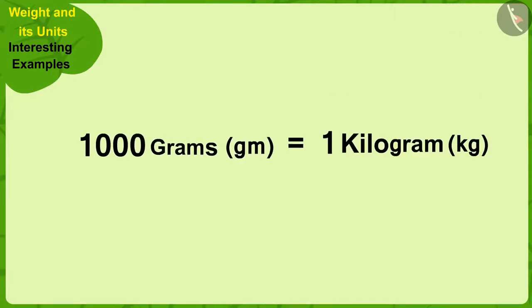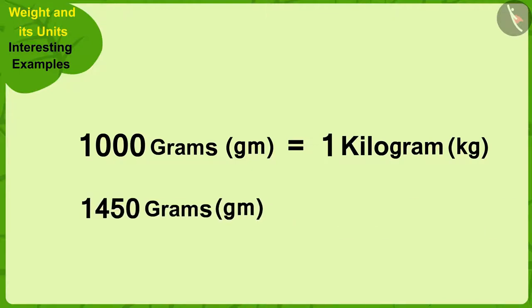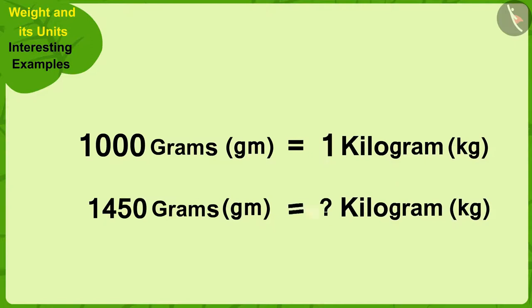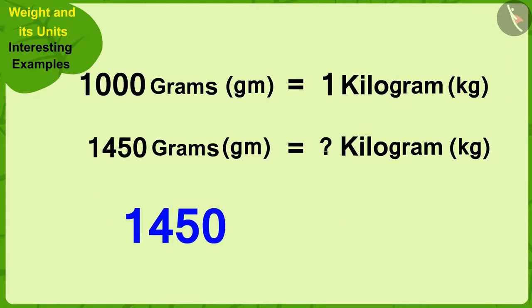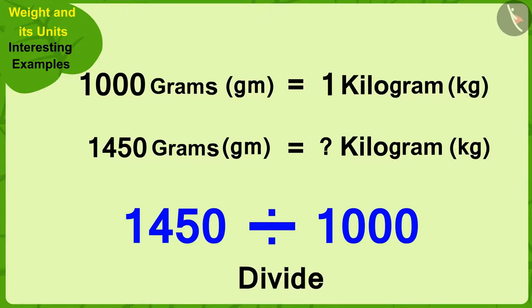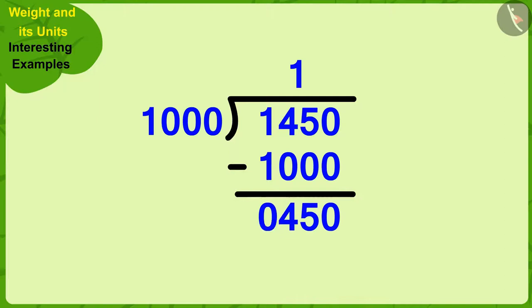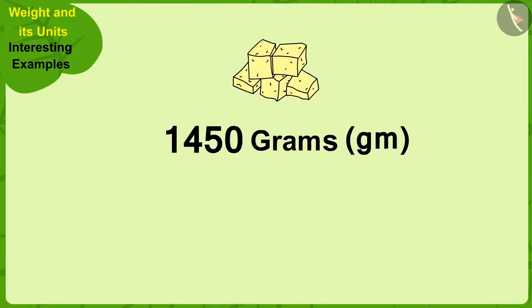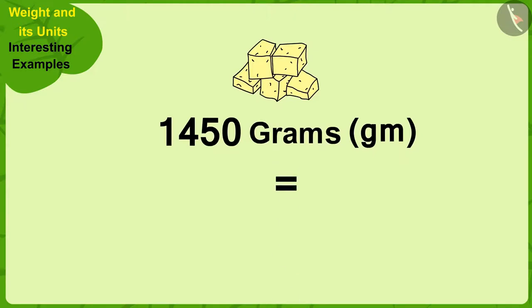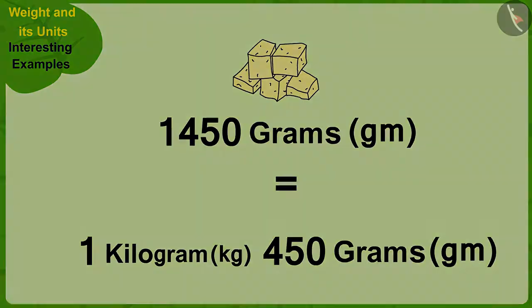1000 grams is equal to 1 kilogram. So, to find out how many kilograms is equal to 1450 grams, we only have to divide 1450 by 1000. We can divide 1450 by 1000 in this way. Now, it is very easy. Whatever number is written here on top is in kilograms, and the remaining numbers are the remaining grams. This means 1450 grams is 1 kilogram and 450 grams.